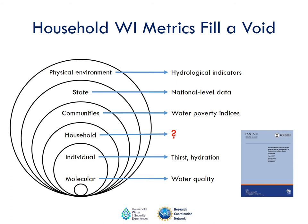What tends to be missing, however, are ways of measuring water security at the household level — which, when you think about it, is odd, because it's at the household level where water abundance or poverty is most keenly felt. Water poverty doesn't make palpable or tangible sense at the community, state or national scales. It's in households that water poverty is most keenly felt, and yet there are very few indices that actually measure household scale water abundance or poverty.